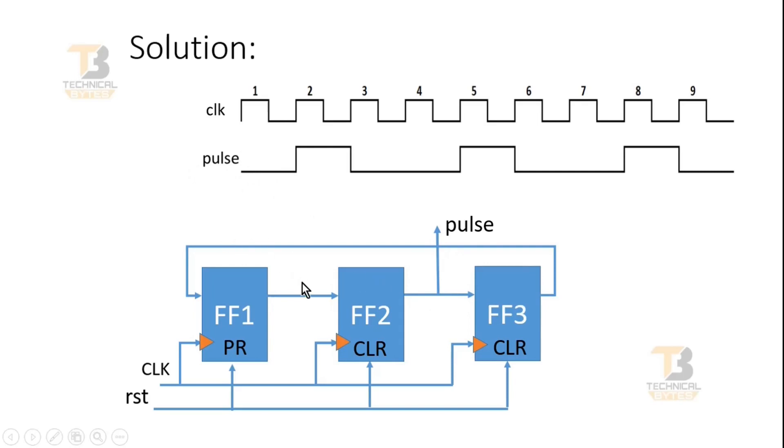In the next clock cycle, this one will be transferred at the output of second flip flop. And the output of third and first flip flop will be 0. And this one is our expectation. Now in the next clock cycle, this one will be transferred at the output of third flip flop. And the output of first and second flip flop will be 0. 0 is my next expectation.